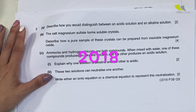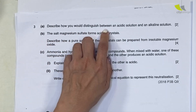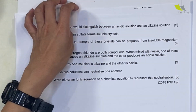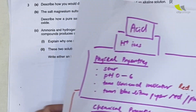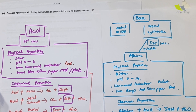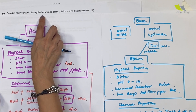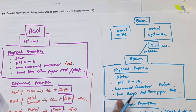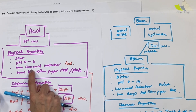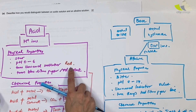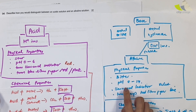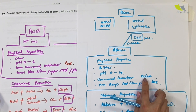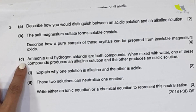From the 2018 paper: 'Describe how you would distinguish between an acidic solution and an alkaline solution.' Both solutions naturally look like plain water, so you cannot tell by sight. Do not say you'd taste them. Instead, use universal indicator — acid turns it red, orange, or yellow; an alkaline solution turns it indigo, blue, or violet.